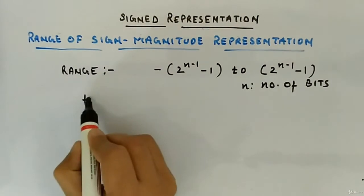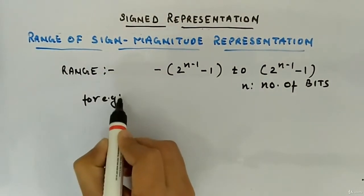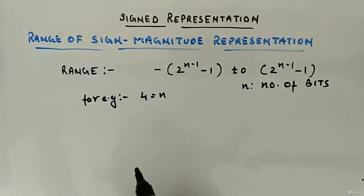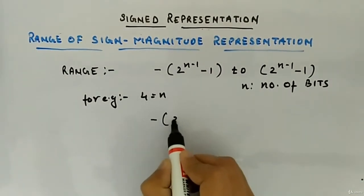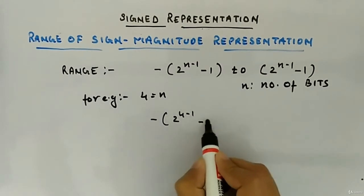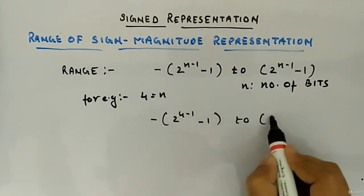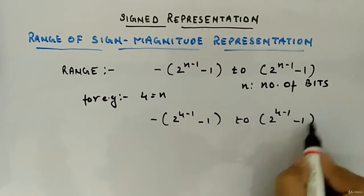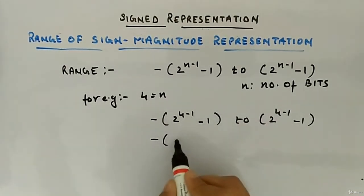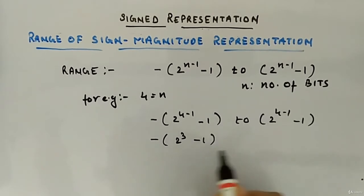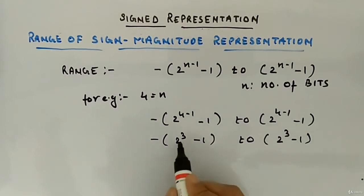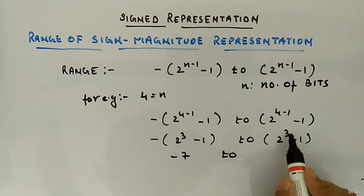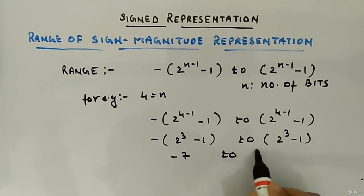For example, if I have four bits, n is equal to 4. Then the range will be minus 2 to the power 4 minus 1, minus 1, to 2 to the power 4 minus 1, minus 1. This will be 2 to the power 3 minus 1, to 2 to the power 3 minus 1. That is 8 minus 1, which is 7. So the range is minus 7 to 7.